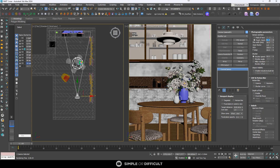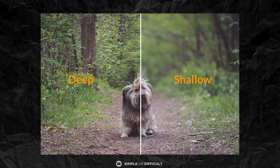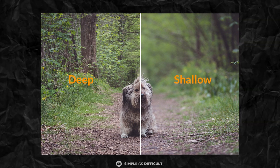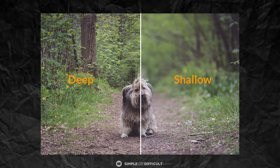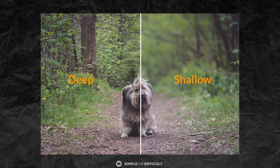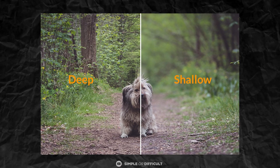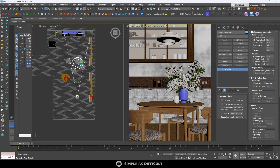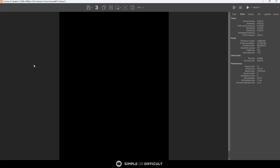It might also interest you to know that a longer focal length makes for a shallower depth of field — meaning a depth of field that is very blurry. A shorter focal length makes the depth of field not as blurry. Enough of the talk, let's get right into it.